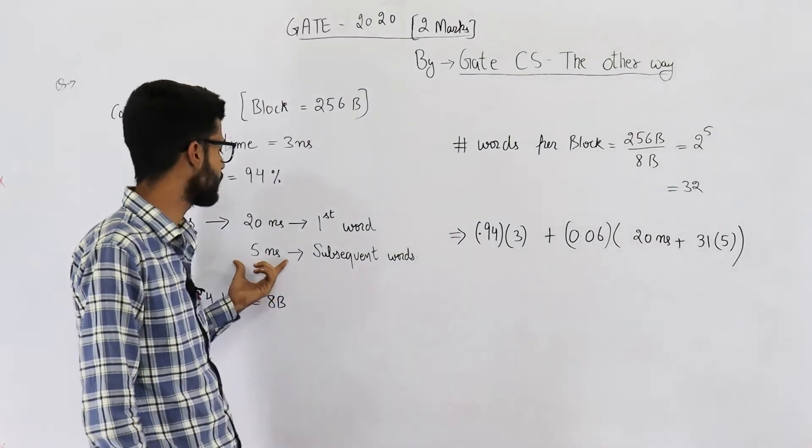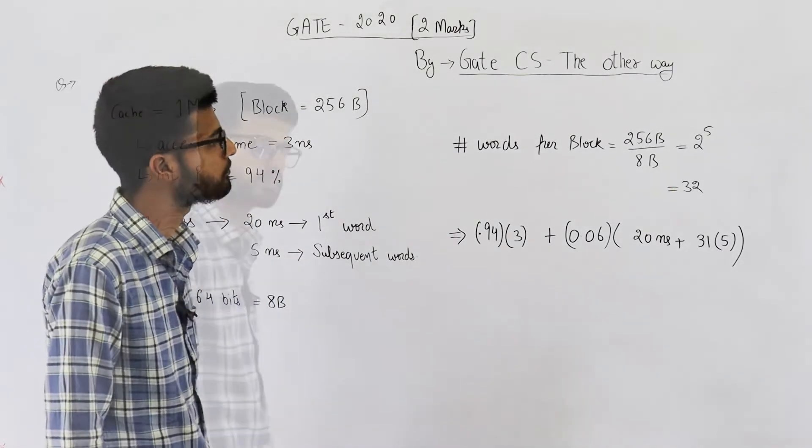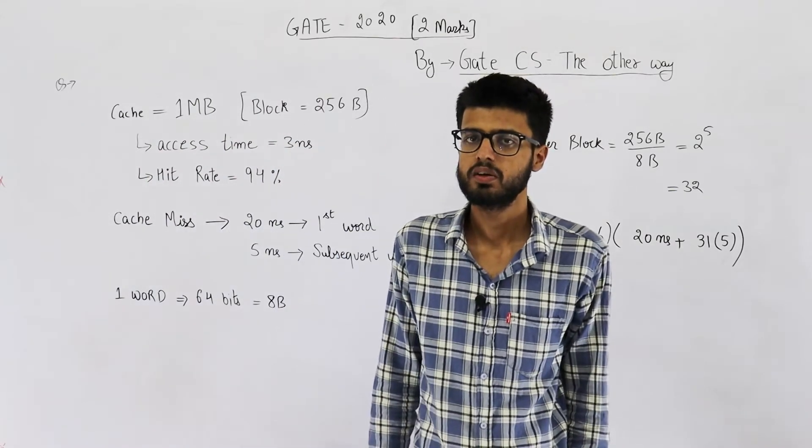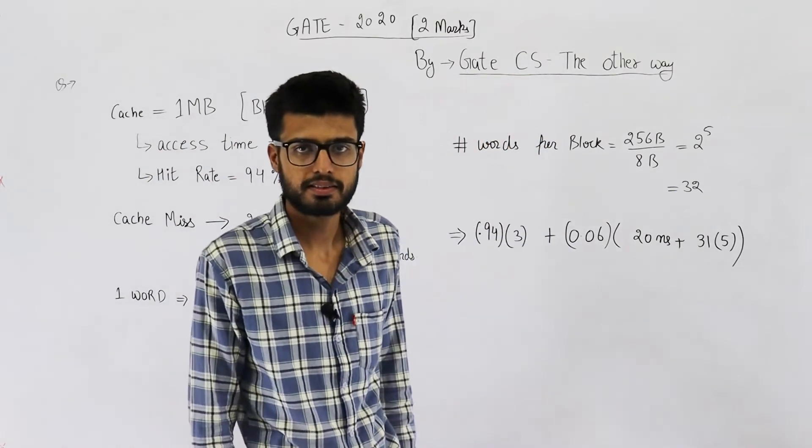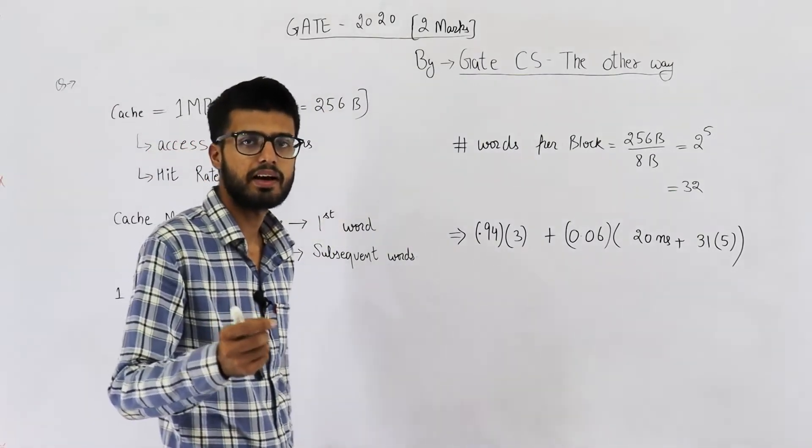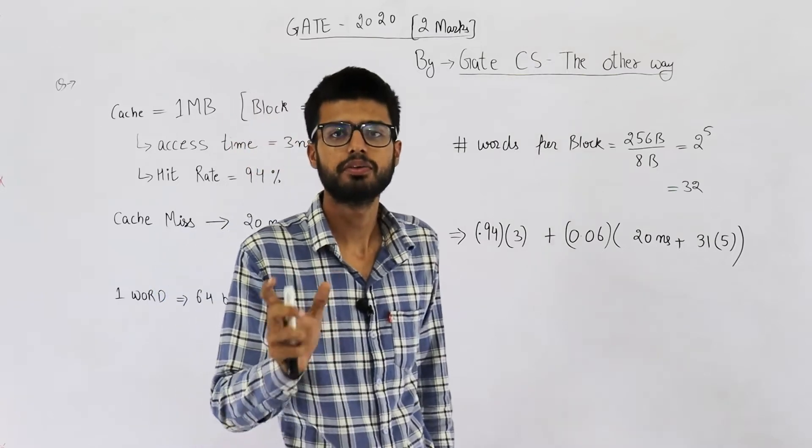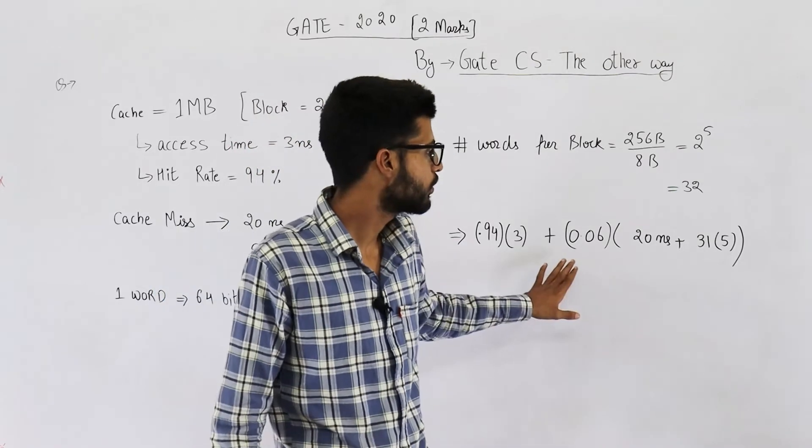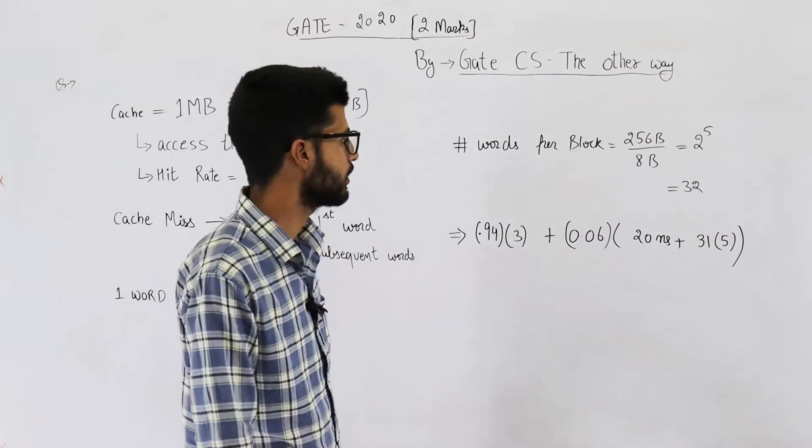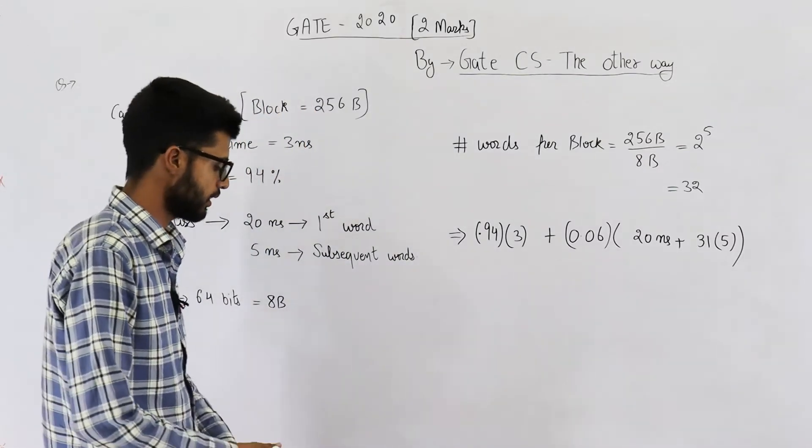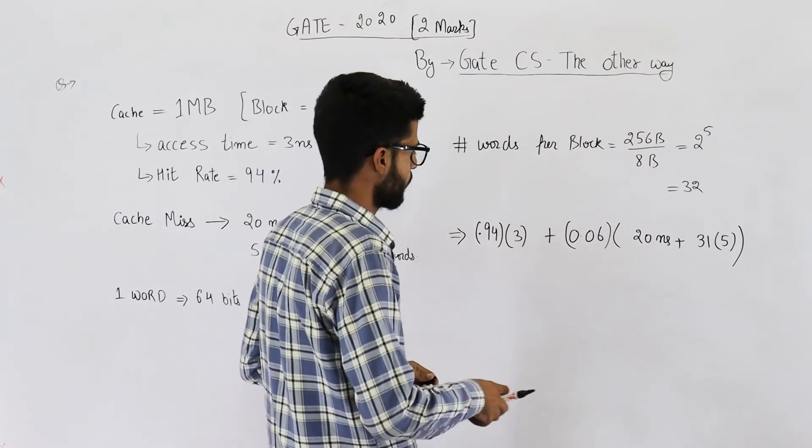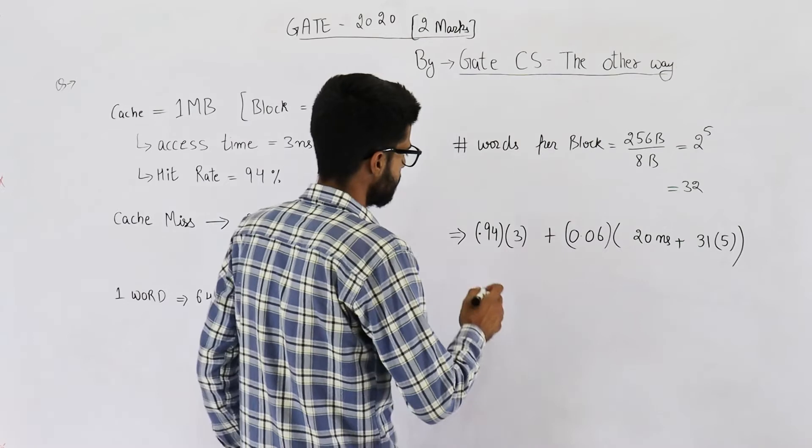Now the thing is, the question does not specify whether we are using hierarchical access or simultaneous access. You can use whichever type of memory you like. If you want to go with this method it's okay, if you want to consider the other method it's okay. Let's find out the answer with this method. Here we are using simultaneous access.